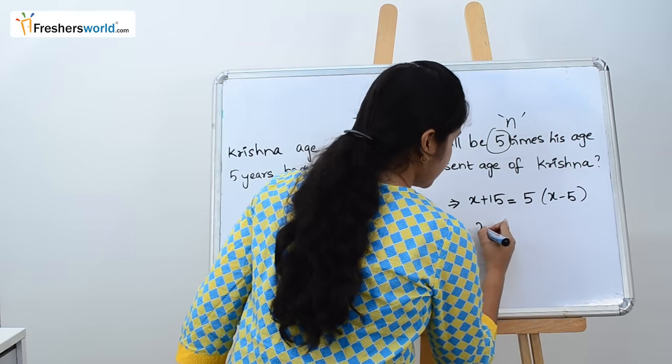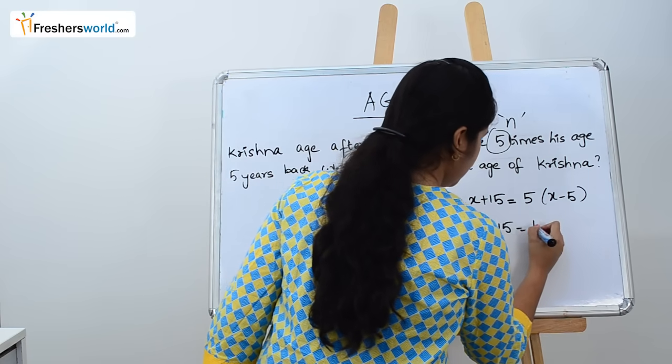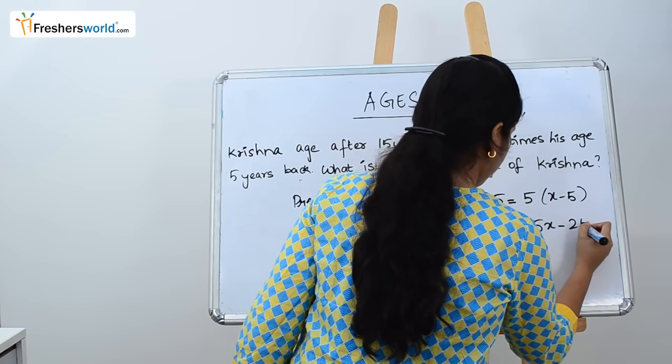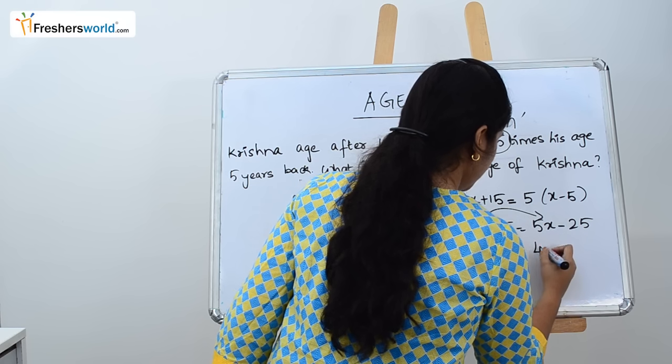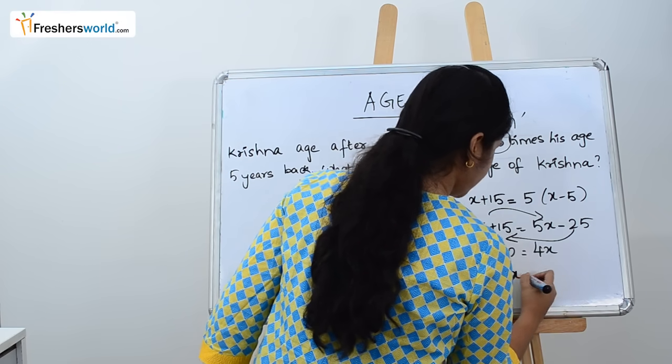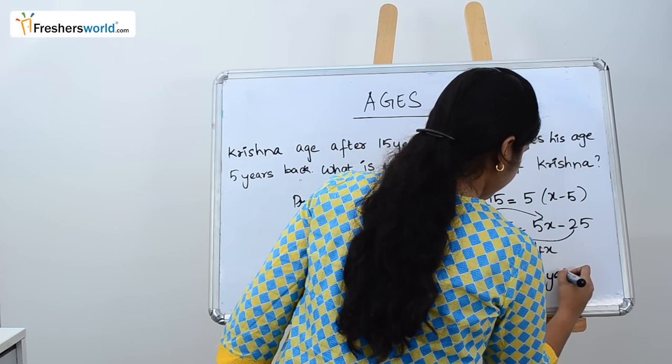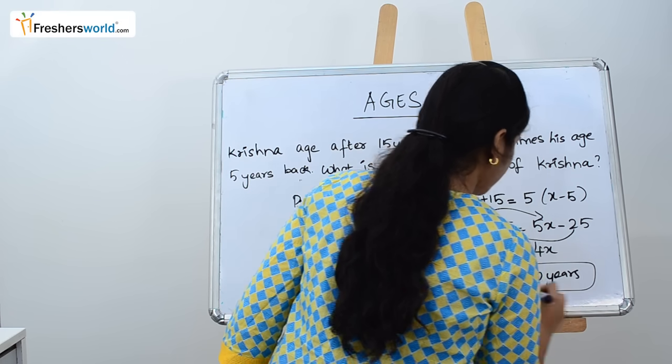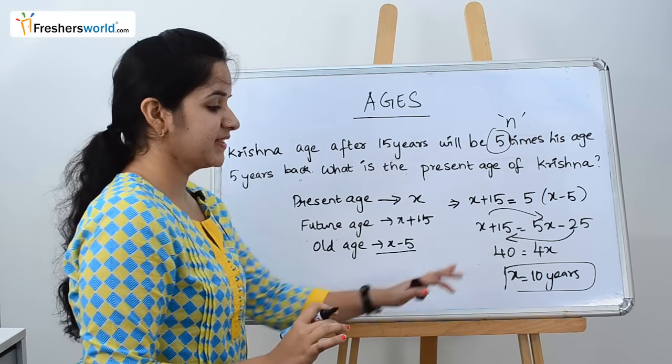Let's solve this equation. X plus 15 equals 5X minus 25. Taking X here, it's 4X, and taking 25 here is 40. So X equals 10. The present age of Krishna is 10 years.